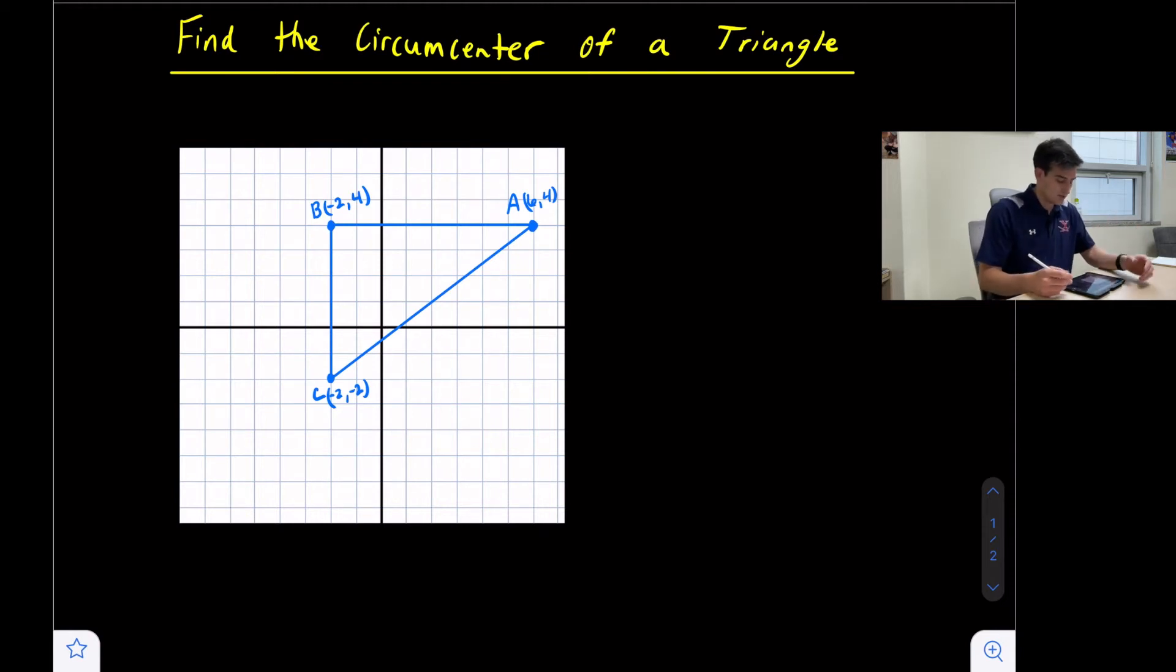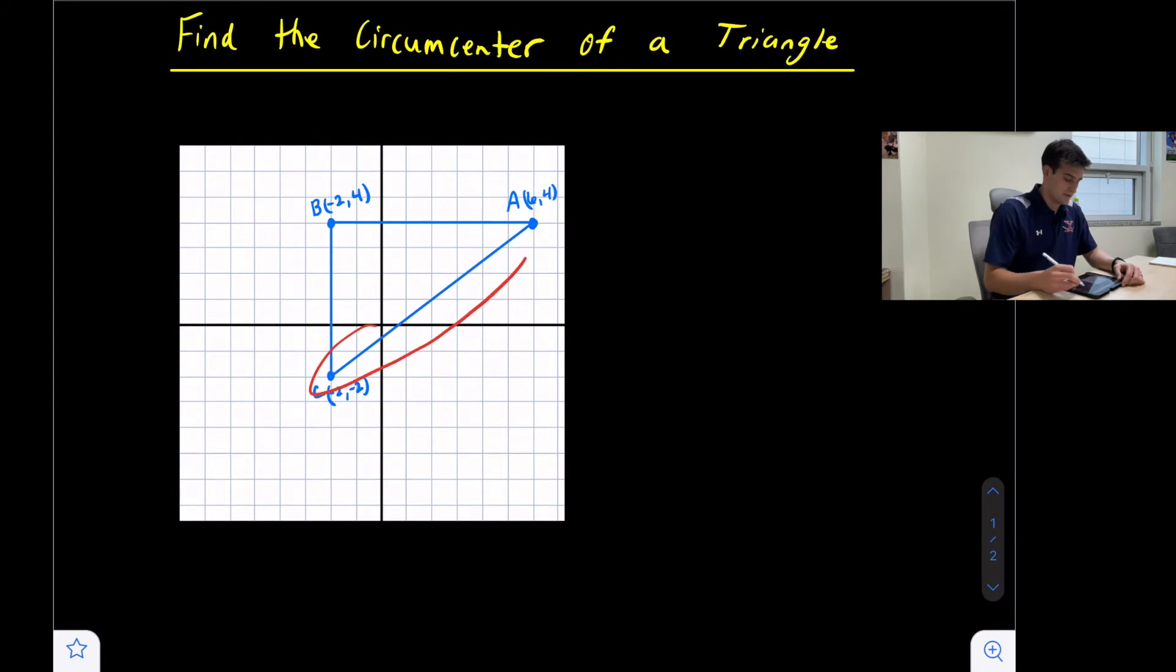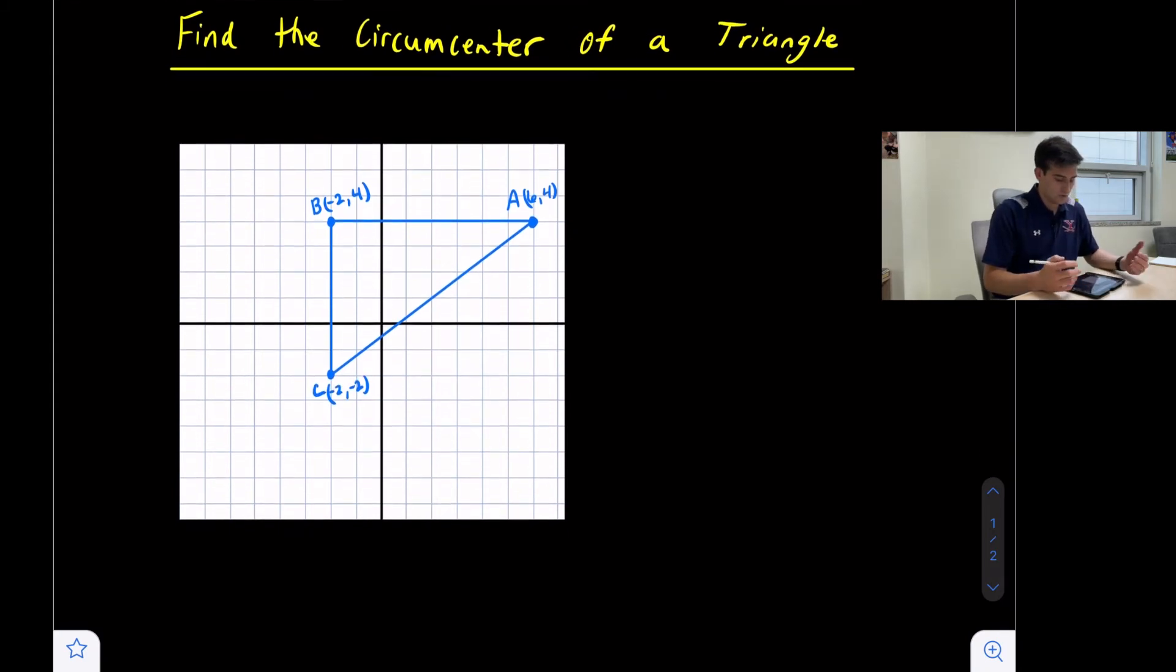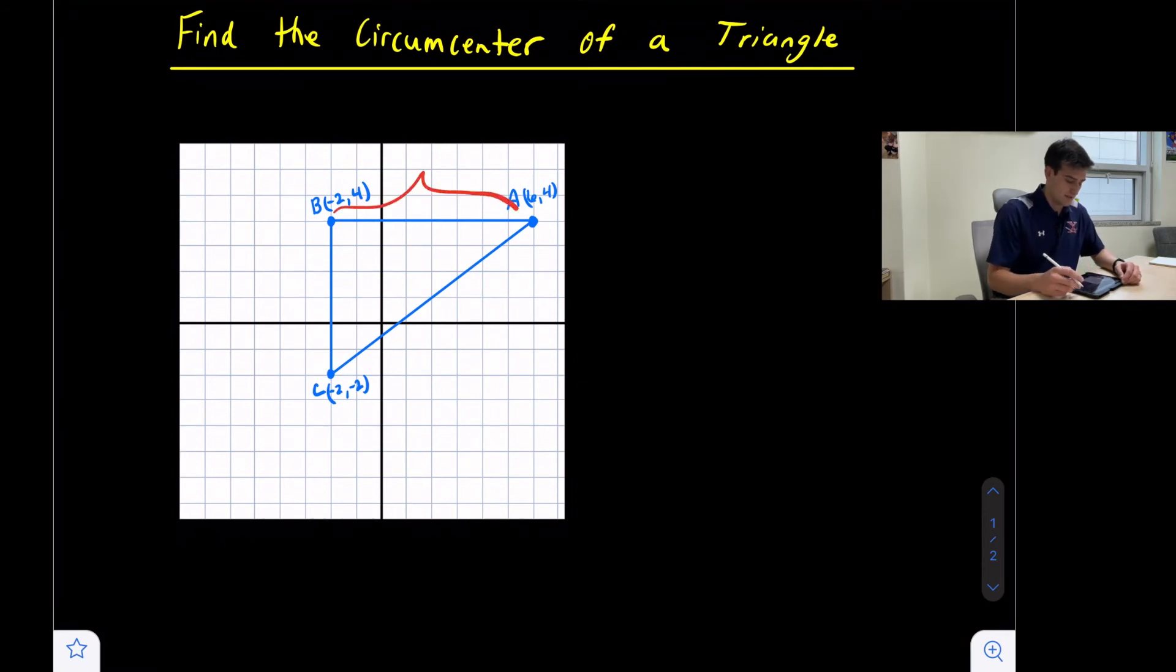Here we have a right triangle, so we know the circumcenter is going to be somewhere along the hypotenuse. Let's take a look at our horizontal side length here—this side AB.